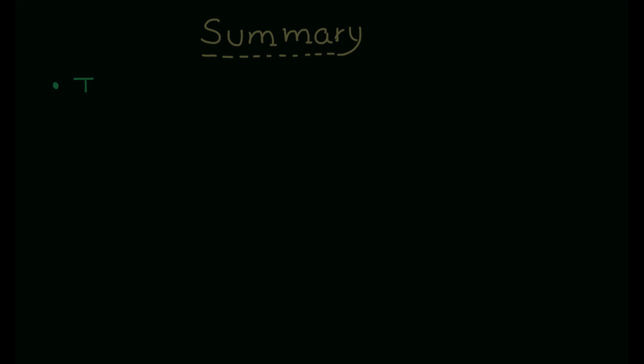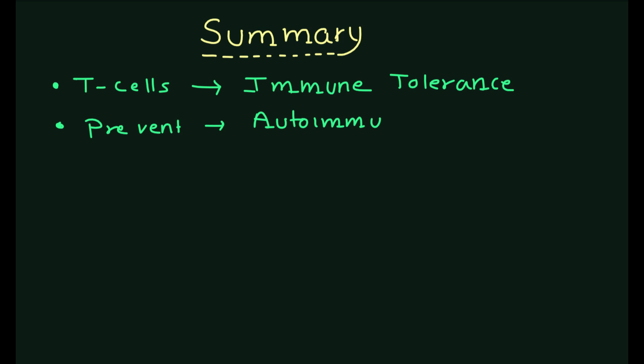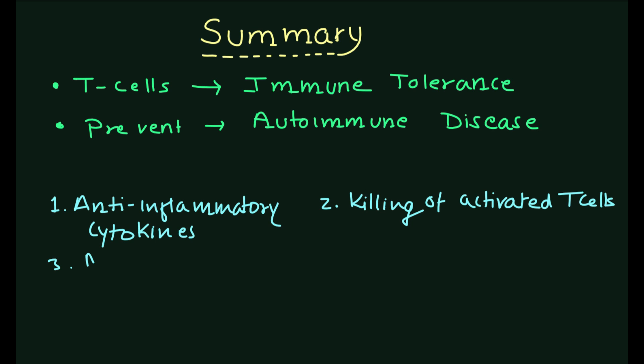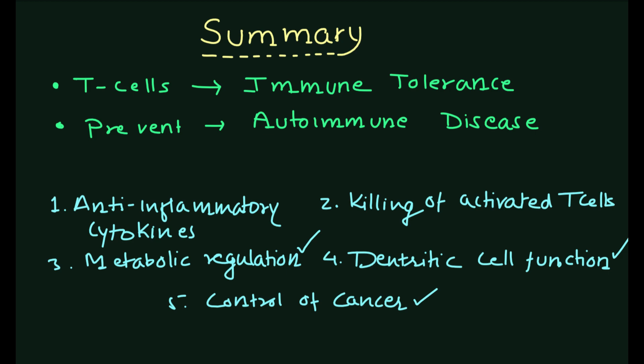Now let's summarize our key points. Regulatory T cells are a specialized subset of T cells that play a crucial role in maintaining immune tolerance and preventing autoimmune diseases. They achieve this through several mechanisms including the production of anti-inflammatory cytokines, direct killing of activated T cells, metabolic regulation, modulation of dendritic cells, and control of cancer.